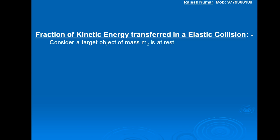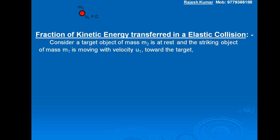Consider a target object of mass M2 initially at rest, so U2 is equal to 0. The striking object of mass M1 is moving with velocity U1 towards the target before collision.